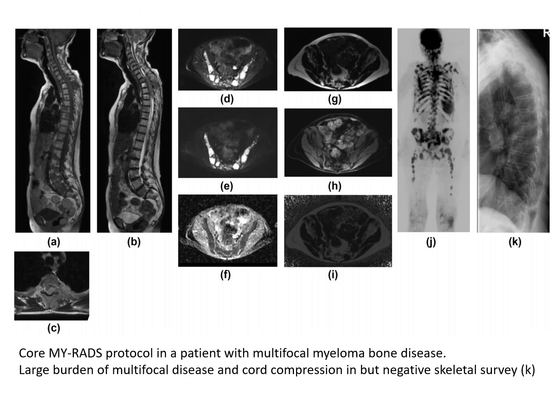This is an example of a core myRADS protocol in a patient with multifocal myeloma bone disease. Despite a heavy disease burden, the skeletal survey is negative, as illustrated in the last image (K). However, whole body MRI shows multifocal distribution of lesions that are hyperintense on diffusion (images D and E) and hypointense on the ADC map, indicating true restriction (image F). The initial images (A, B, C) also reveal significant spinal cord compression, which must be urgently communicated to the referring clinician.